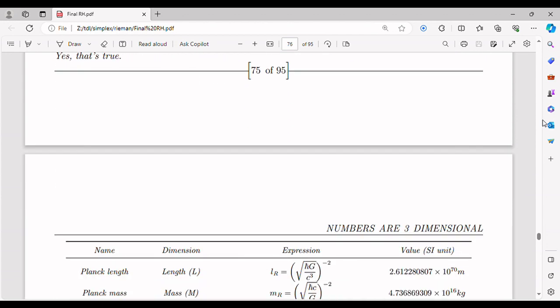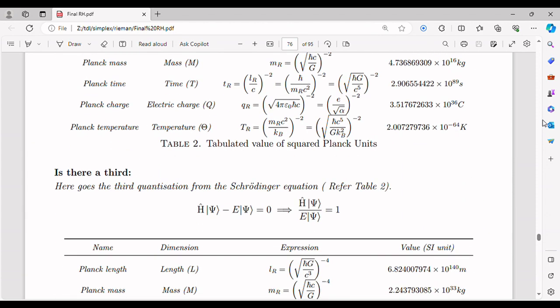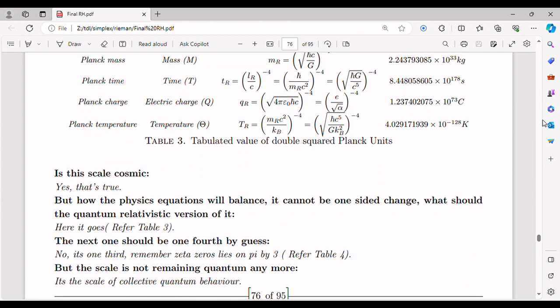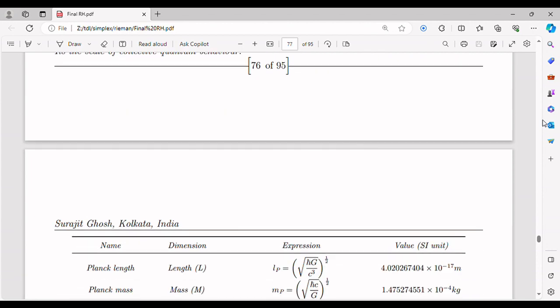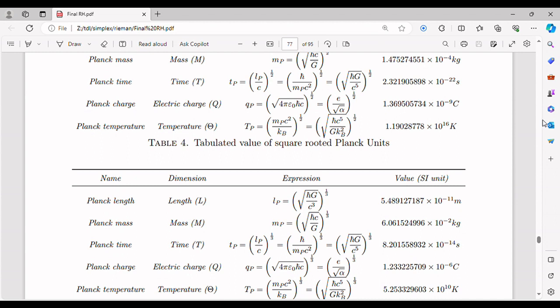The unification of real and imaginary numbers would foster interdisciplinary collaborations and cross-pollination of ideas across all branches of science. It would encourage researchers to explore new mathematical frameworks and develop novel approaches to understanding complex phenomena. This integration could have implications for fields such as chemistry, biology, materials science, and more, by providing enhanced mathematical tools for modeling and simulating intricate systems.